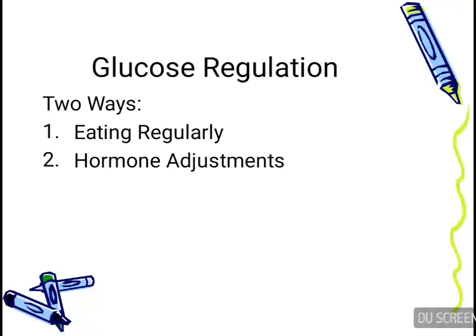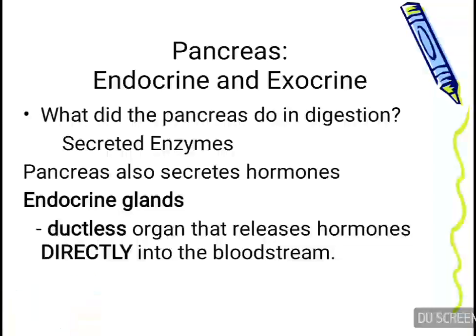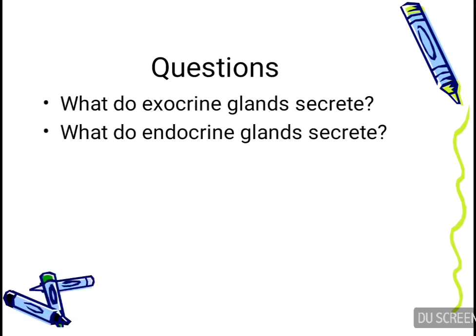Have you heard about glucose regulation? There are two ways of glucose regulation: eating regularly and hormone adjustments. Now let's move to the pancreas. The pancreas is called a heterocrine gland because it has both endocrine and exocrine parts. The exocrine part participates in digestion by secreting various digestive enzymes, whereas the endocrine part is ductless and releases hormones directly into the bloodstream.